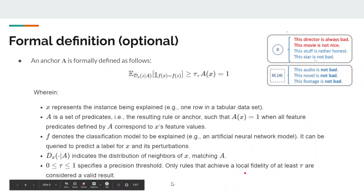And there is a parameter tau between 0 and 1, which specifies a precision threshold. So only rules that achieve a local fidelity of at least tau are considered a valid result. So we can say that an anchor A is considered an anchor if the expectation of evaluating the neighbors of the perturbations on D with respect to the conditional distribution when the rule A applies is greater than parameter tau, given that all the predicates are true.